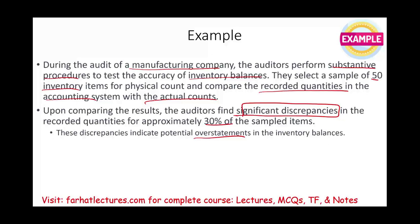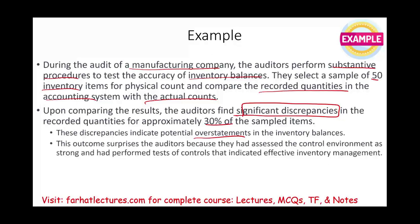They found significant discrepancies in the recorded quantities for approximately 30% of the sampled items — about 15 items were incorrectly recorded. These discrepancies indicate a potential overstatement in the inventory balance. This outcome surprised the auditor because they had assessed the control environment for inventory as strong and performed tests of control that indicated effective inventory management, so they thought internal control was good and relied on it.